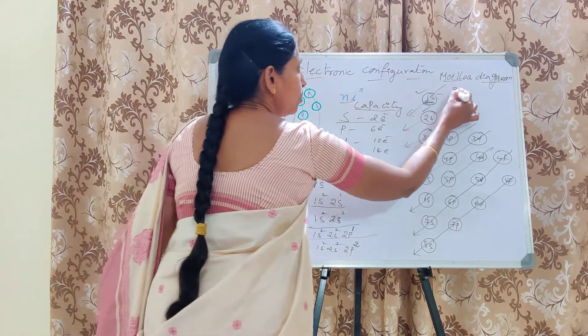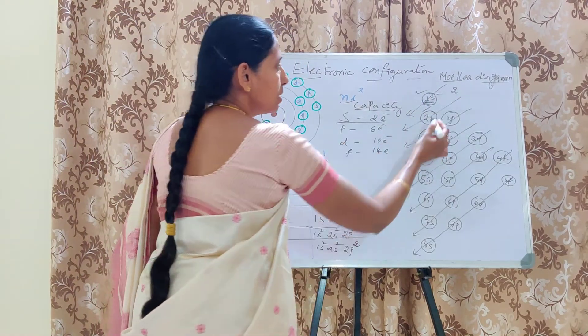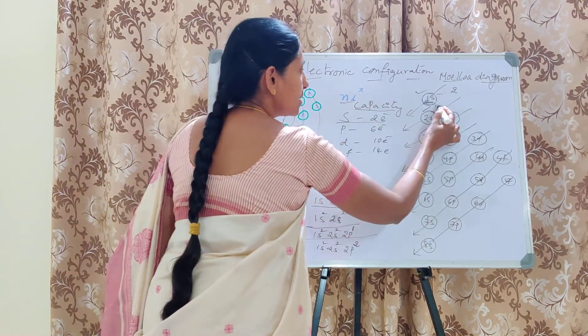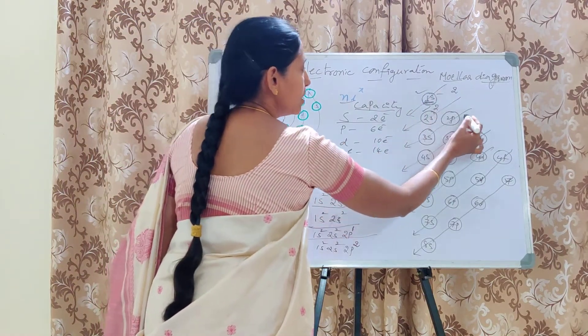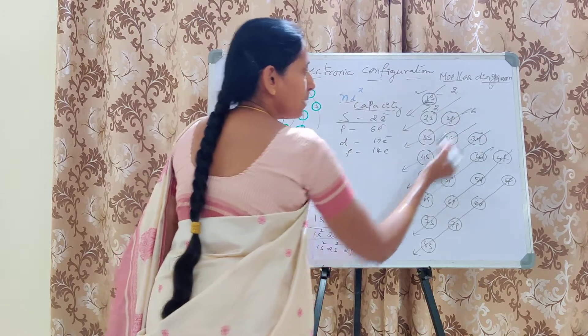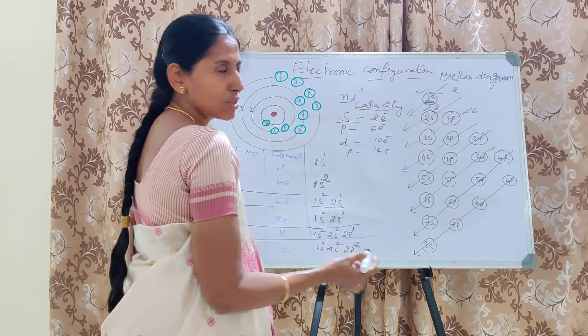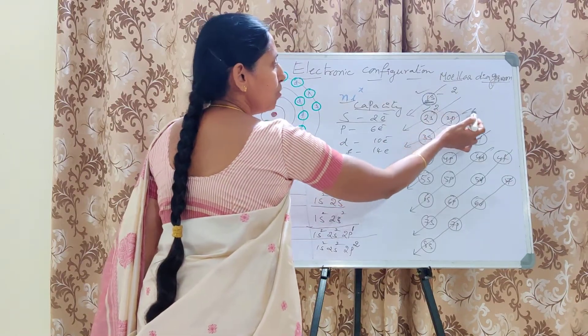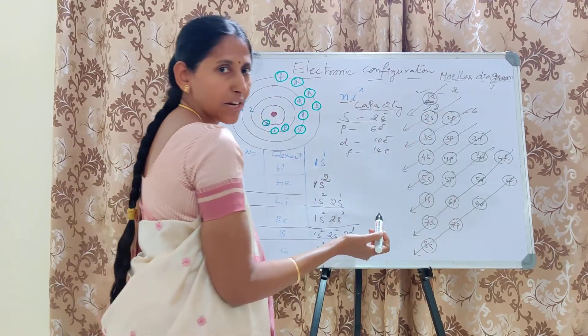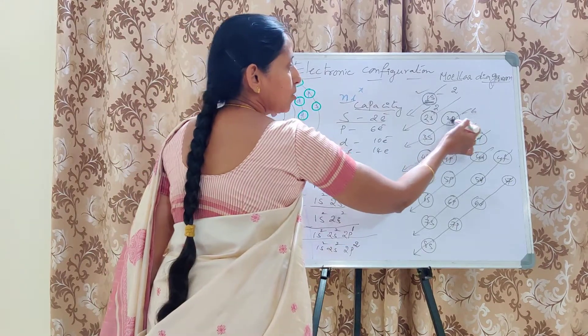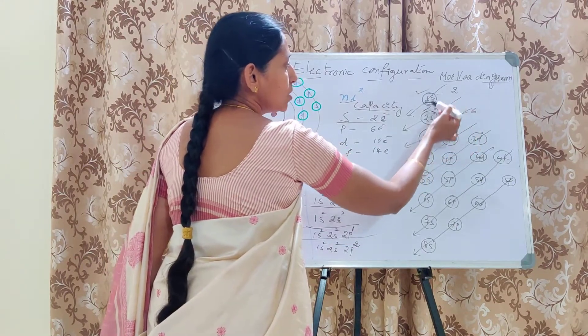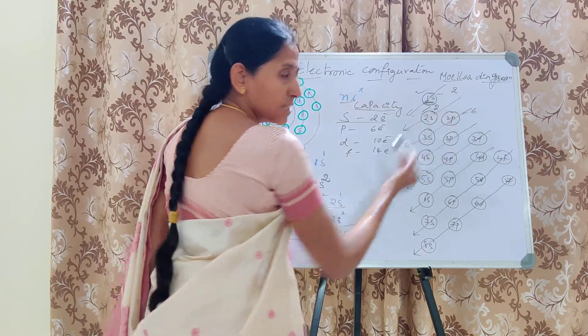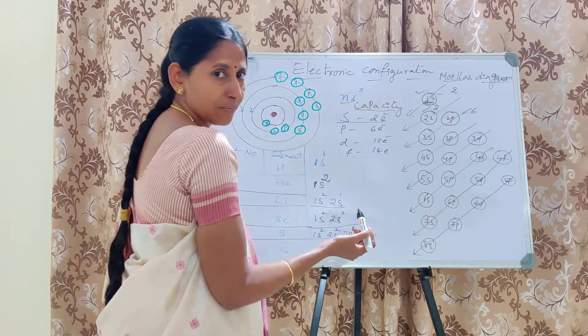The first shell holds 2 electrons, 2S holds 2, and 2P holds 6 — so 2 plus 2 equals 4, and 4 plus 6 equals 10. Up to 10 electrons, the configuration 1S² 2S² 2P⁶ will be filled.